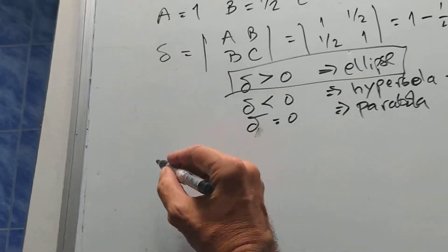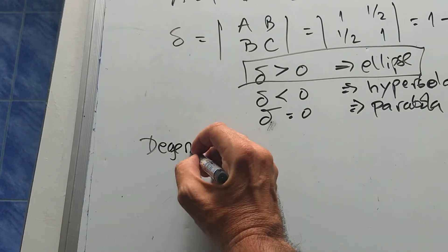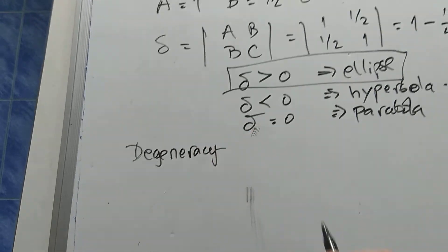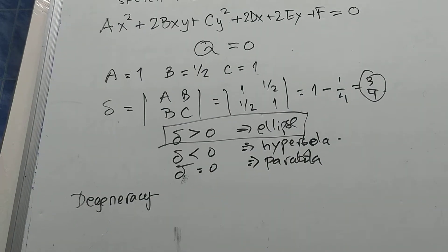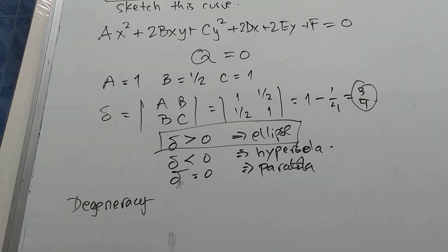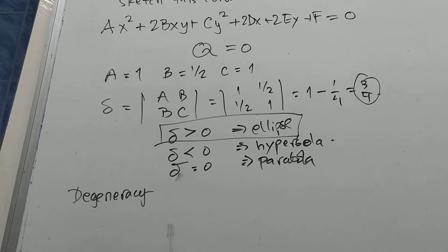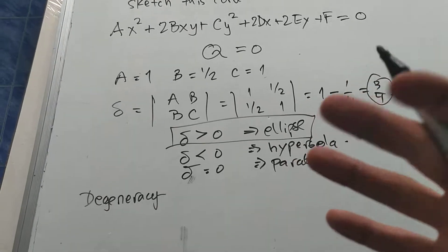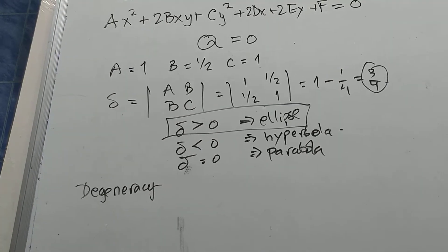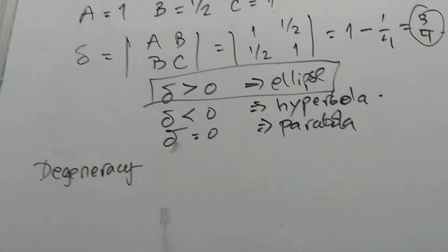Alright, now we have to check for degeneracy. Because it's possible that this is not an ellipse. It might actually be a point. Or, you know, hyperbola can be degenerate, become two lines, and so on. So let's just check for degeneracy.